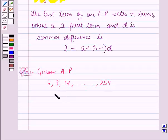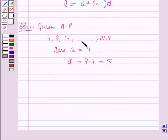Here the first term A equals 4 and the common difference D equals 9 minus 4 which is equal to 5. Also, the last term in this AP is 254.